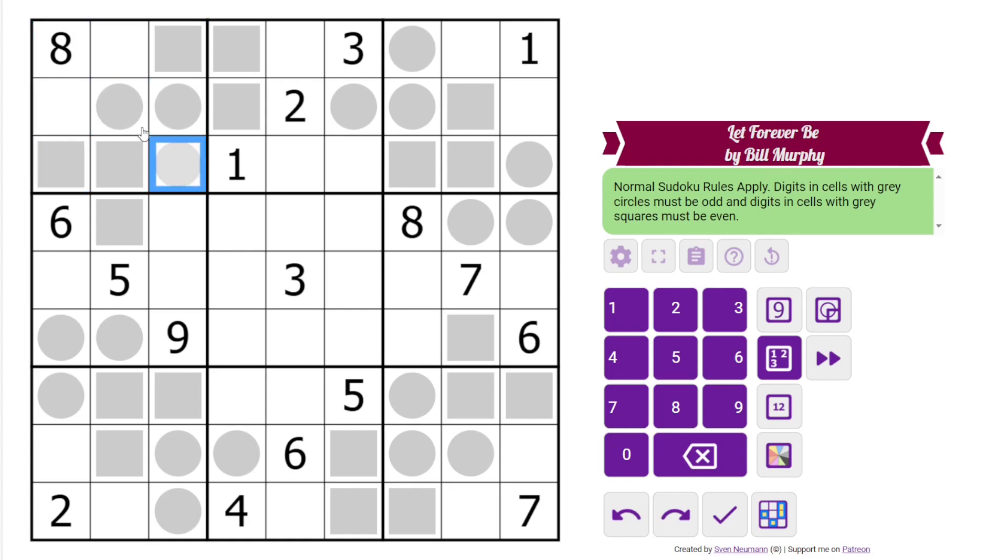Additionally, we have some gray circles in the grid. Anywhere we have a gray circle, we must put an odd digit. And we have some gray squares in the grid. Anywhere we have a gray square, we must put an even digit. Obviously not all of the circles and squares are given. Bill has given us enough that we can figure out where the rest of them need to go.